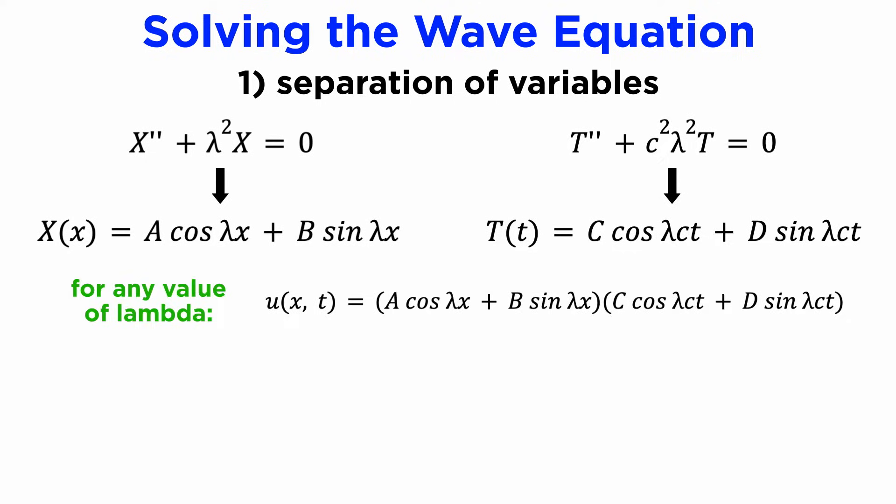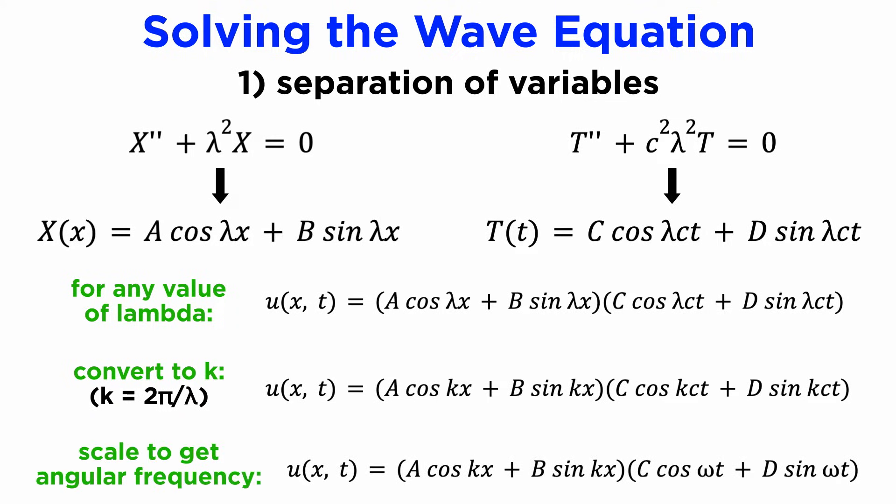Without any boundary conditions, we can accept any value of lambda whatsoever, and the solution will be valid. Note that in the context of waves, it might be better to use the wave number k instead of lambda, since lambda is typically used to mean wavelength. For our function t of t, we can replace k times c with omega, which is the angular frequency of the wave. Note that k and omega are not independent, they are in a ratio defined by the wave speed c, which is a constant that was part of the original PDE.